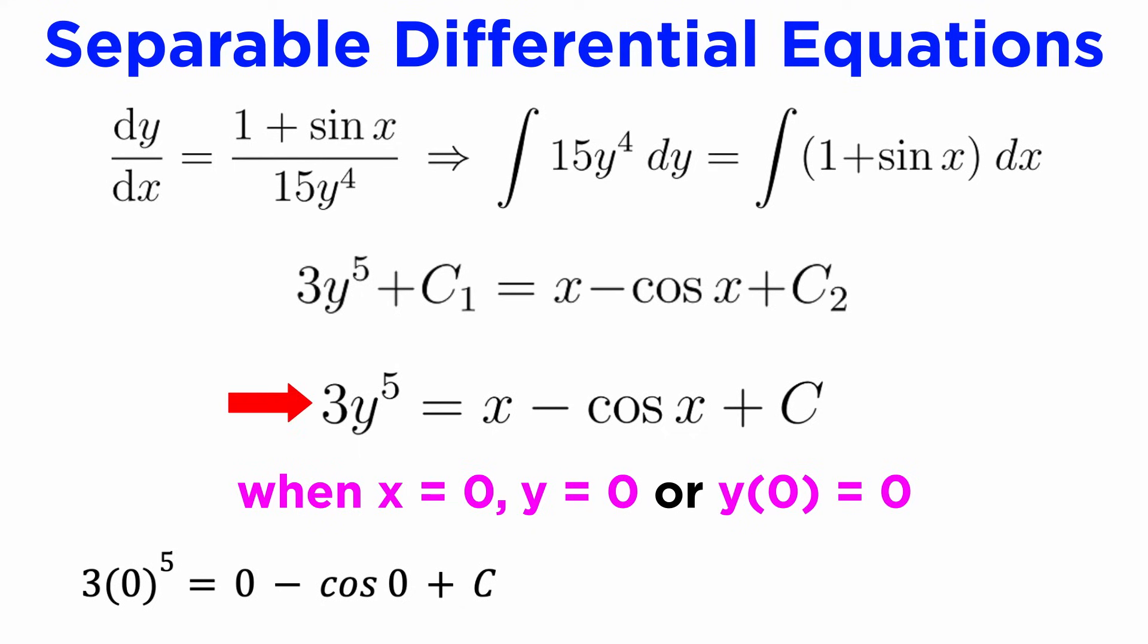and in this case the algebra will be simpler if we use the implicit solution: 3y to the fifth equals x minus cosine of x plus c. Let's now set y equal to 0 and x equal to 0 because of our boundary condition. We get 0 on the left side, and on the right side, recalling that the cosine of 0 is 1, we get negative 1 plus c.